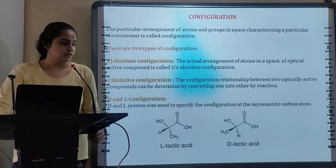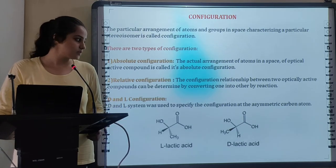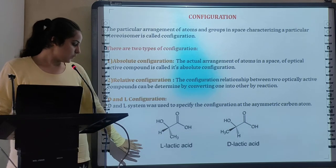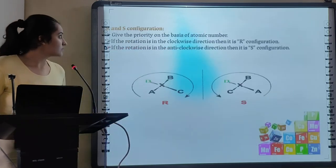Now, D and L configuration. D and L system is used to specify configuration at asymmetric carbon atom. These are 2 examples: L-lactic acid and D-lactic acid.